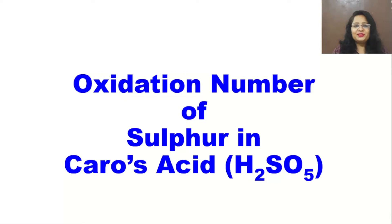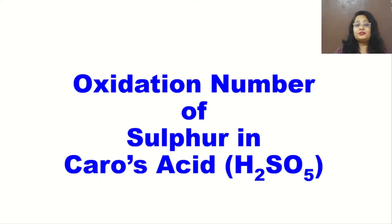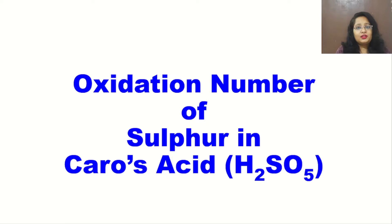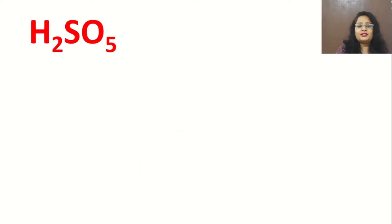Hello friends, welcome to Chemistry Nuggets, where you can polish your knowledge and clear your doubts. Today's video is about the oxidation state of sulfur in Caro's acid. The formula is H₂SO₅, so let's have a look at Caro's acid.